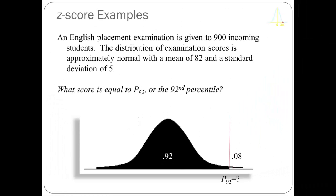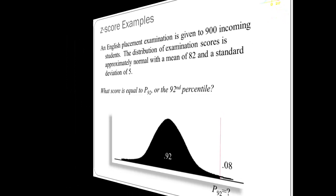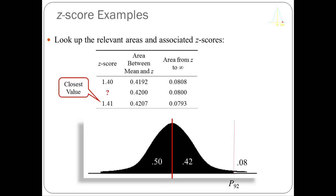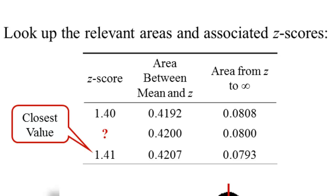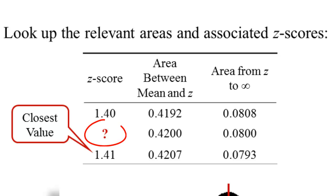How do we figure out what test score equals the 92nd percentile? I'm going to use the Z-table differently. In the graphic I've laid out all three regions: 0.5 below the mean, 0.42 between the mean and the 92nd percentile, and 0.08 above. Going to the Z-table, I go inside the table — I don't look at the Z-scores, I look at the areas between the mean and Z — and I'm looking for the value of 0.42. If I can find 0.42, I just read to the side of the table to get the exact Z-score.